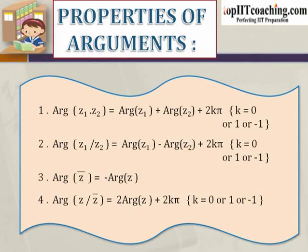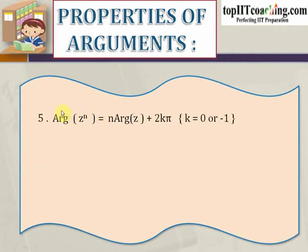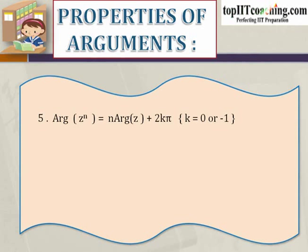So if z is a complex number, then z-bar would be its conjugate. If we divide z by z-bar, then we get another complex number, and the argument of this complex number would be equal to 2 times the argument of z plus 2kπ, where k is equal to 0, 1, or minus 1. The fifth is: argument of z to the power of n is equal to n times the argument of z plus 2kπ, where k is equal to 0, 1, or minus 1. So if we have a complex number z, then the argument of z to the power of n is equal to n times the argument of z plus 2kπ.